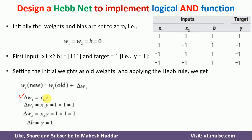For the first training example, we calculate ΔW1, ΔW2, and ΔB. ΔW1 = X1 × Y = 1 × 1 = 1. ΔW2 = X2 × Y = 1 × 1 = 1. ΔB equals the associated target, which is 1. So ΔW1 = 1, ΔW2 = 1, and ΔB = 1.